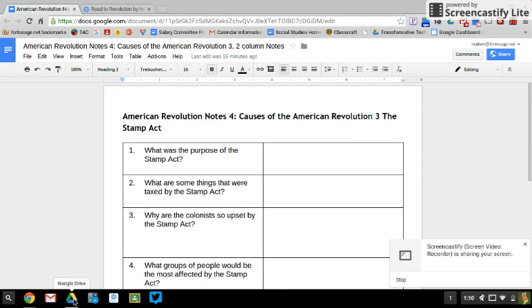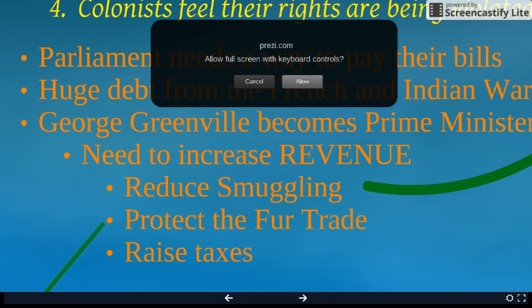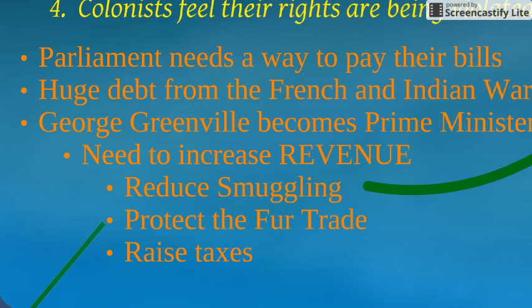Welcome back. Today we're continuing with the American Revolution notes, focusing on Cause of the American Revolution number three: the Stamp Act. When we left off, we talked about how Britain has this huge debt from the French and Indian War that they need to pay off, and a new prime minister came in who needed to increase revenue.